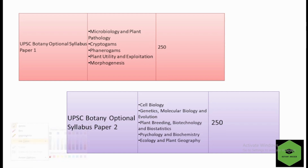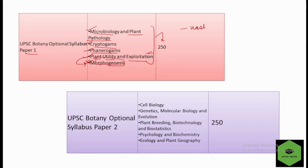Let's talk about the syllabus of both papers. In Paper 1, we have five main units: Microbiology and Plant Pathology, Cryptogams, Phanerogams, Plant Utility and Exploitation, and Morphogenesis. All of these units are very vast in nature — I've just listed the main unit names. We will be having a complete lecture series for explanation of each subject in the next lectures. Every particular topic is vast and you need to be smart in preparing for Paper 1.